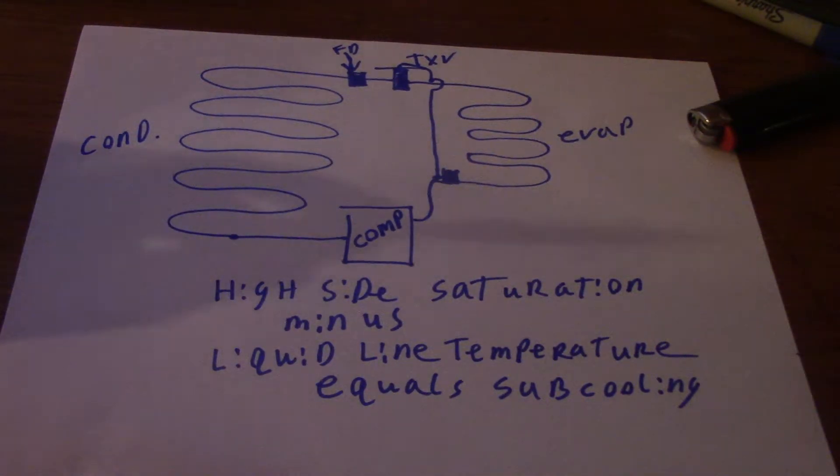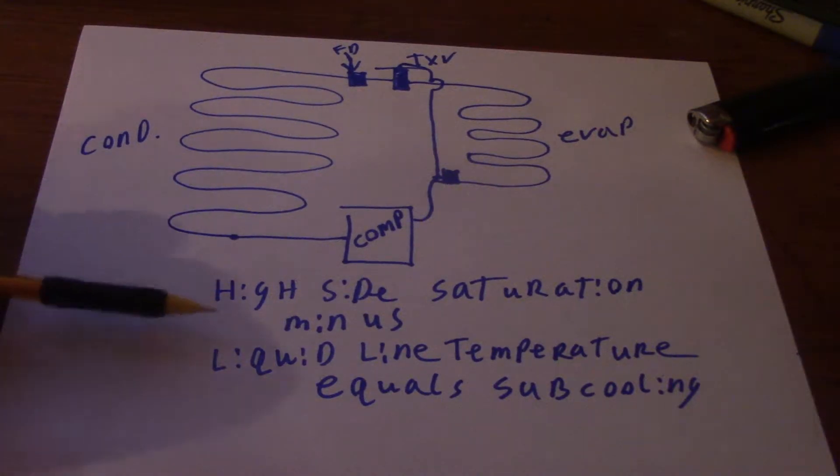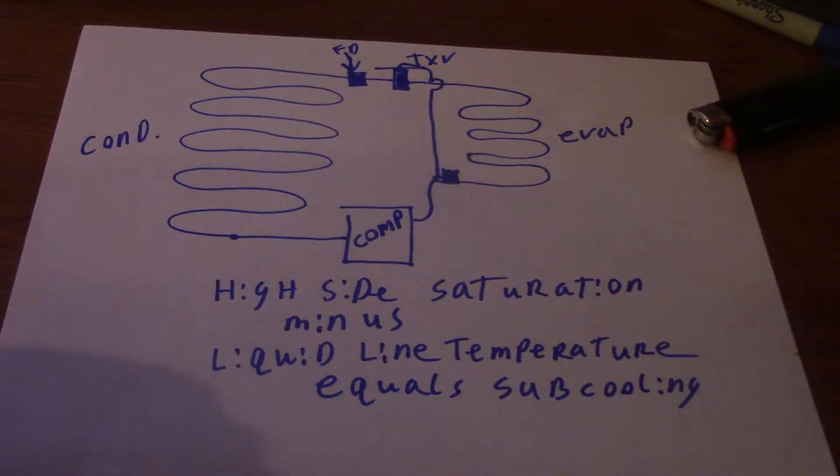You have to remember to follow the formula. It's going to be high side saturation minus liquid line temperature to calculate subcooling. That is the formula. It is specific you have to have there.